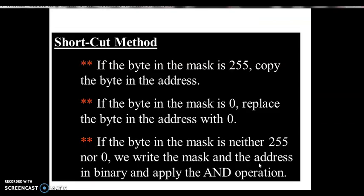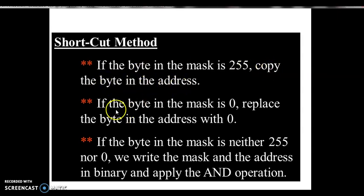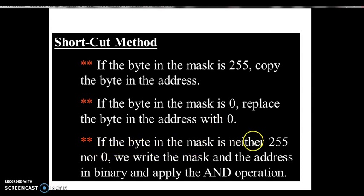Now we will calculate what we mean by subnet address. There is a shortcut method: if the byte in the mask is 255, copy the byte in the address; if the byte in the mask is 0, replace the byte in the address with 0; if the byte in the mask is neither 255 nor 0, write both the mask and the address in binary and apply the AND operation.